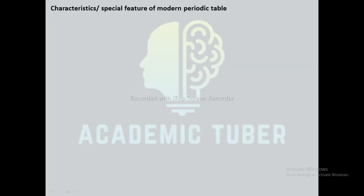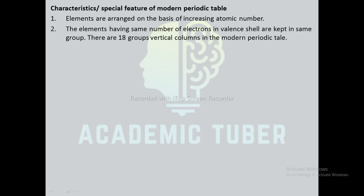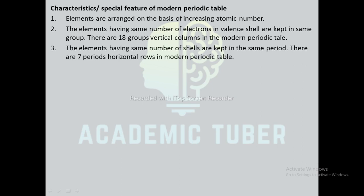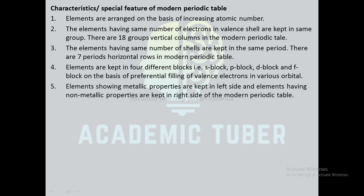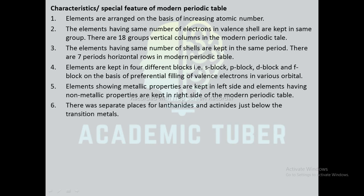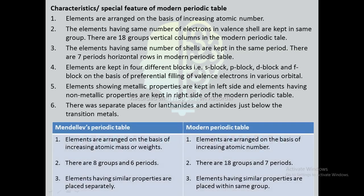Characteristic features of the modern periodic table: elements are arranged on the basis of increasing atomic number. Elements having the same number of electrons in the valence shell are kept in the same group. There are 18 groups (vertical columns) in the modern periodic table. Elements having the same number of shells are kept in the same period, and there are seven periods (horizontal rows). Elements are kept in four different blocks: s block, p block, d block, and f block, on the basis of preferential filling of valence electrons in various orbitals. Elements with metallic properties are kept on the left side and elements with non-metallic properties are kept on the right side. There are separate places for lanthanides and actinides just below the transition metals.